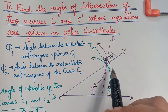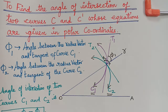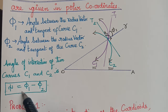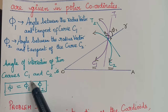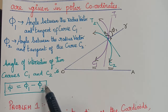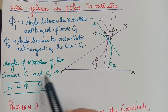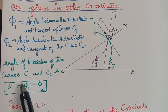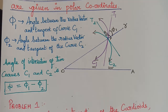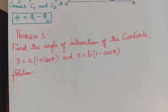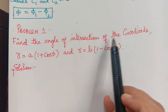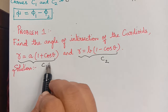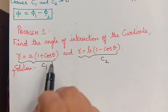We have to find the angle of intersection of the curves. The angle of intersection of two curves C1 and C2, represented by xi, will be equal to the difference of those two angles — phi2 minus phi1, or phi1 minus phi2. Whichever is the higher angle should be written first to avoid negative angles. The difference of phi1 and phi2 gives us the angle of intersection. We shall learn this with the help of an example problem involving cardioids.